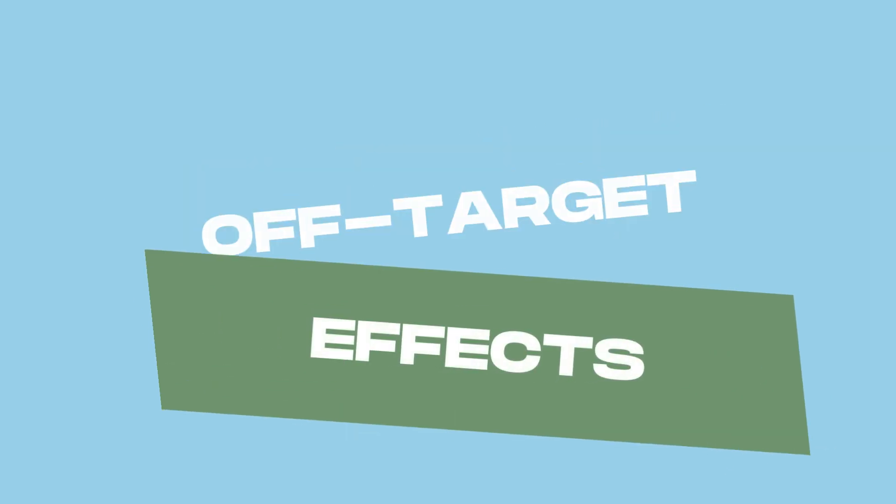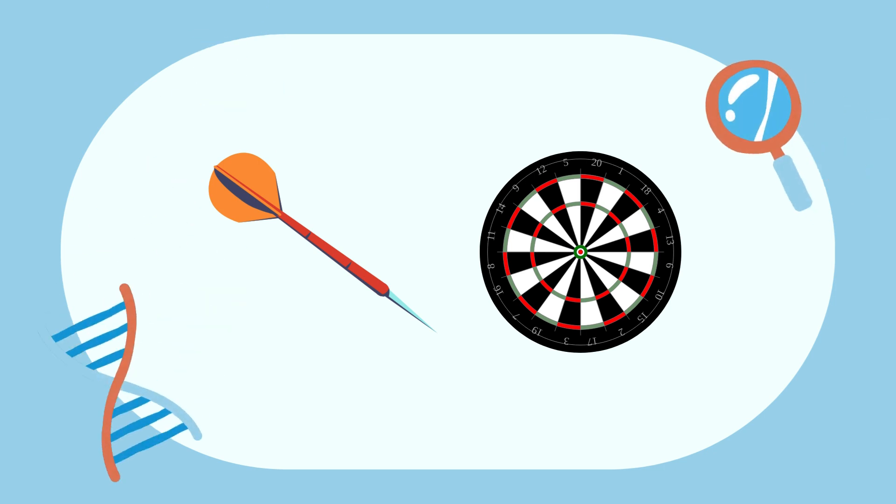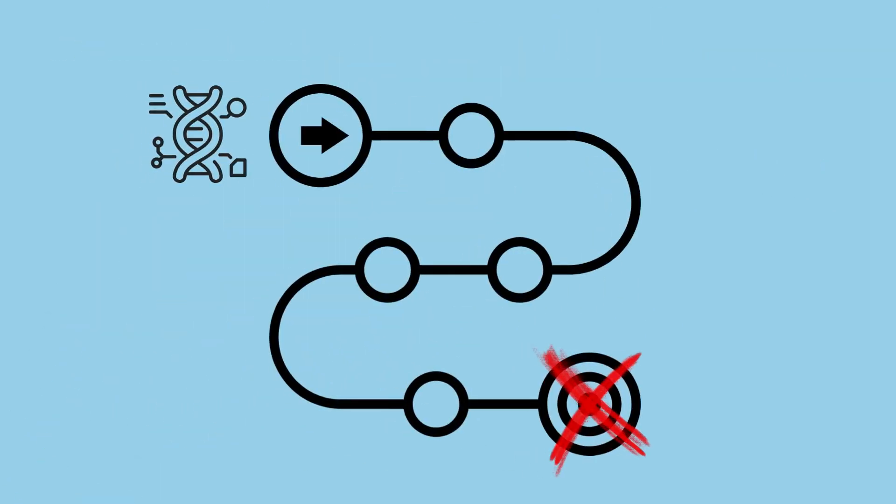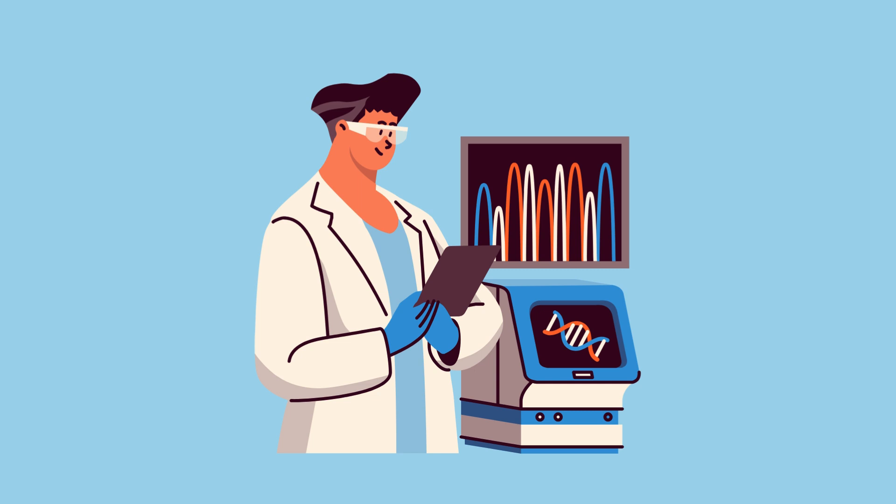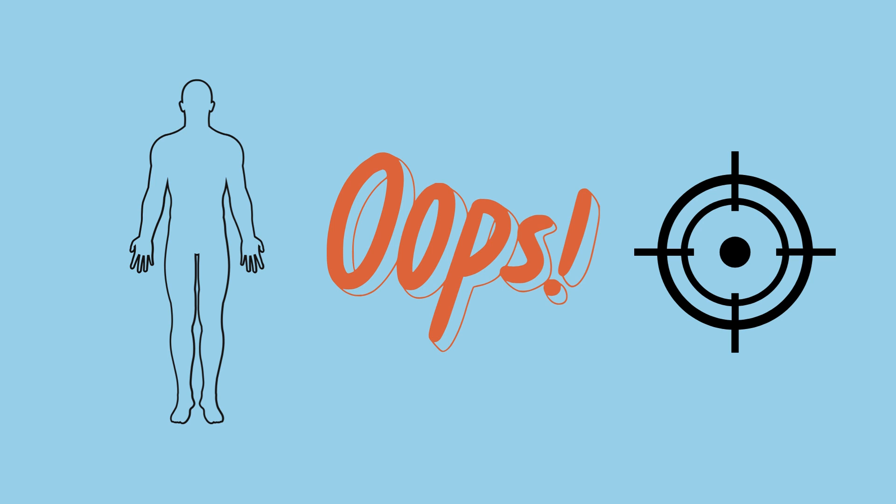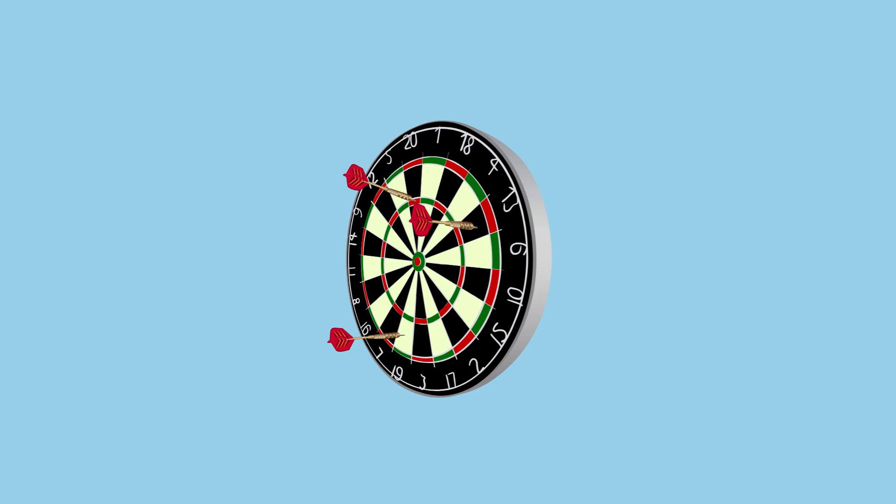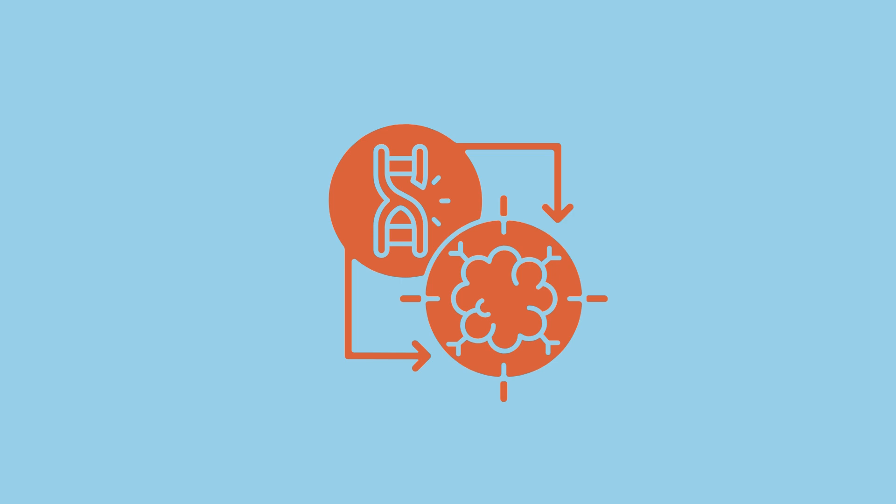Imagine you're trying to hit a target with a dart, but instead of hitting the bullseye, your dart veers off and hits something else nearby. In biology, when scientists design gene therapy treatments to target specific parts of the body, sometimes they can accidentally affect other parts too. Just like when you're hitting the wrong thing on the dart. This is what we call off-target effects.